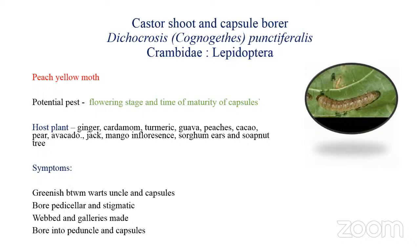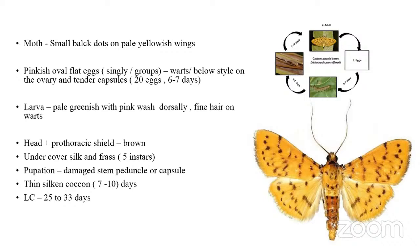As it grows, this pest will bore into the castor bean through the peduncle portion and feed on the inner content. The medium-sized adult moth has small black dots on pale yellowish wings.